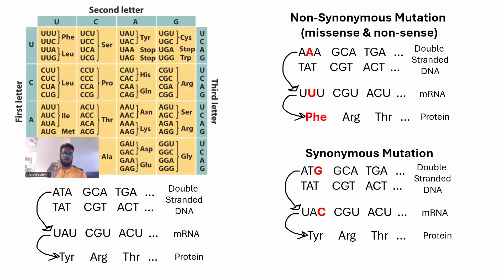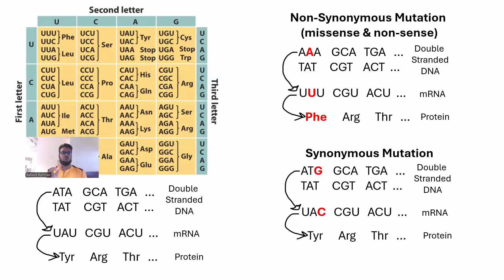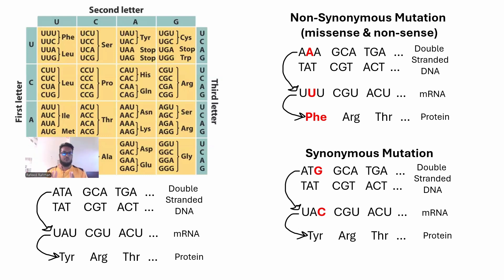One other thing: mutations only in the protein-coding regions of the genome matter. Protein-coding regions were discussed in detail in the gene expression video, part 5. Protein-coding regions are only 1–2% of the human genome, so these mutations most often will not do anything. But sometimes they can, if there is a non-synonymous mutation in the protein-coding region and the amino acid change significantly alters the protein fold — which we discussed in part 7.